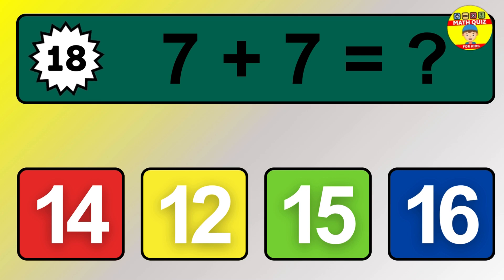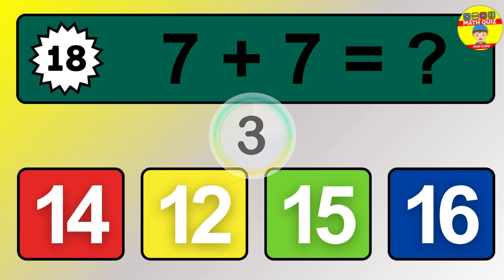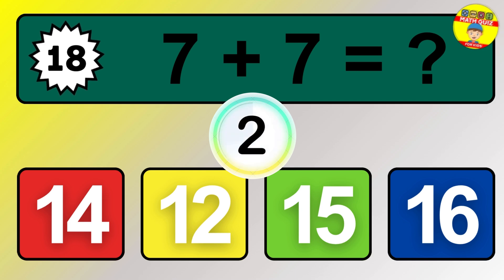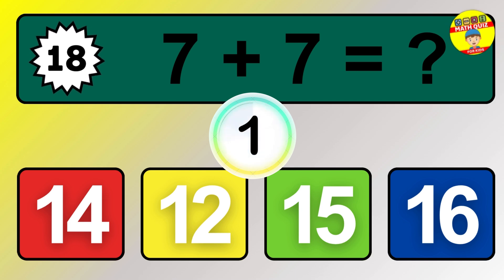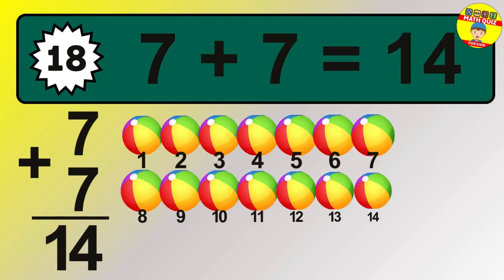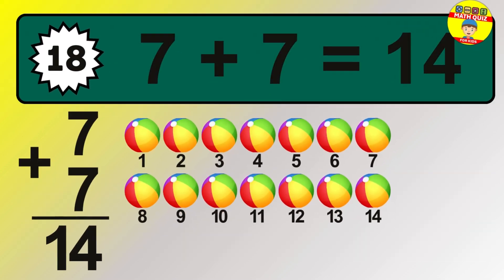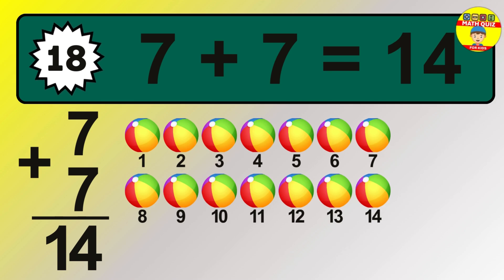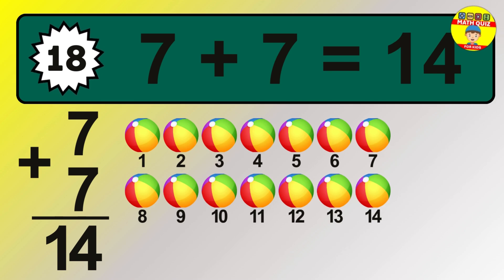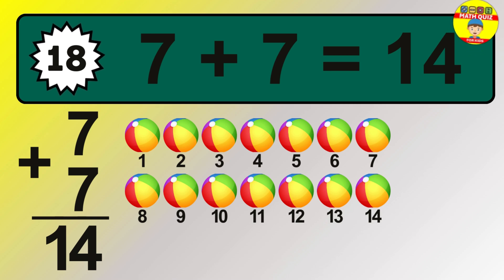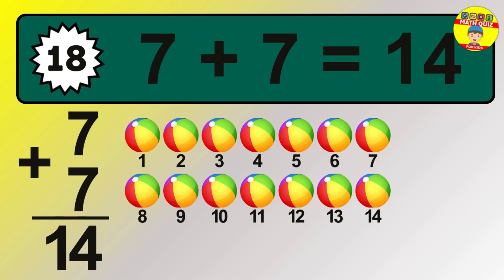Question 18. 7 plus 7 equals what? So the answer is 7 plus 7 is 14. Let's count it. 1, 2, 3, 4, 5, 6, 7, 8, 9, 10, 11, 12, 13, 14.